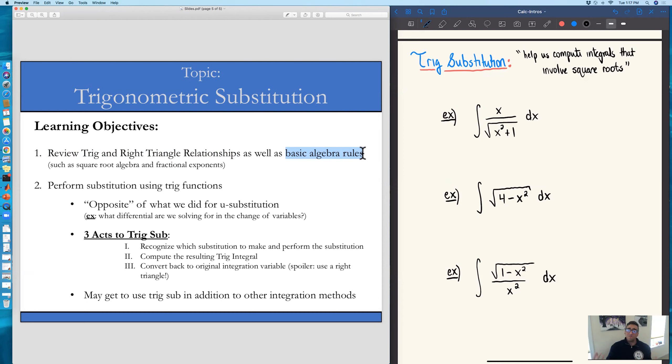So the big idea of what we're going to use trig sub for are these types of integrals that you see on the right-hand side of the page here. All of these integrals involve square roots, and trig sub really is a method that helps us compute integrals that involve square roots because many times these integrals are impossible or very difficult to do otherwise.